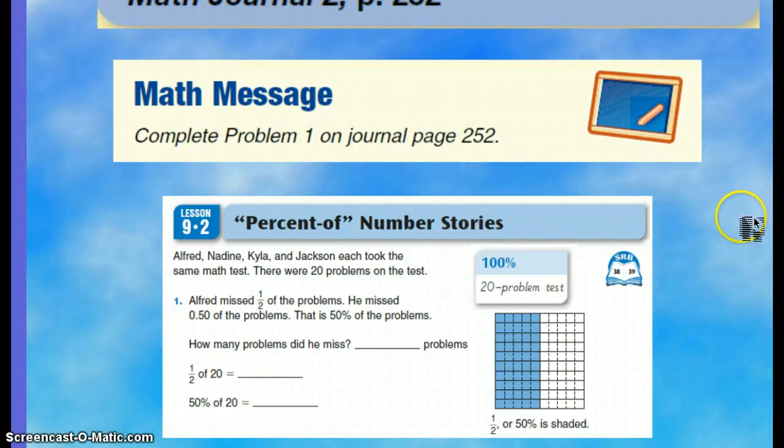Get out your math journal and turn to page 252. Alfred, Nadine, Kyla, and Jackson each took the same math test. There were 20 problems on the test.